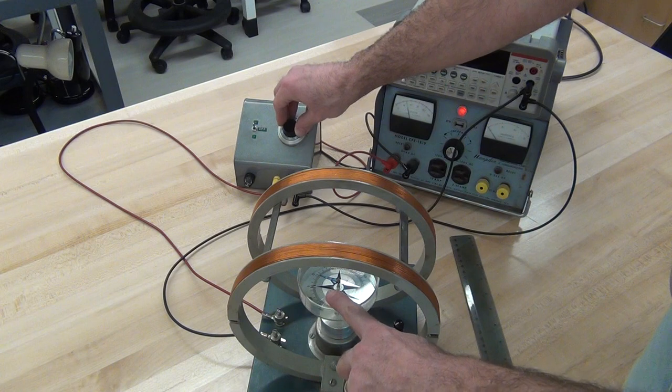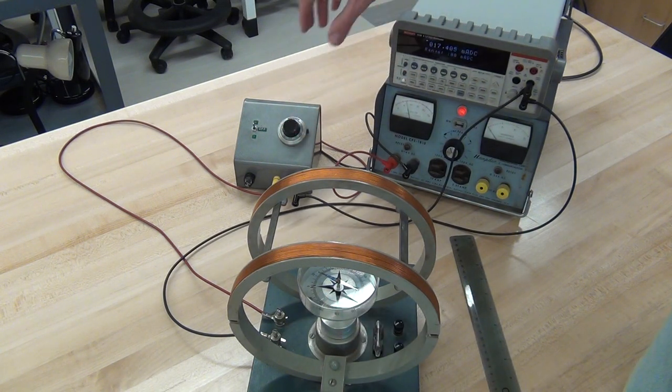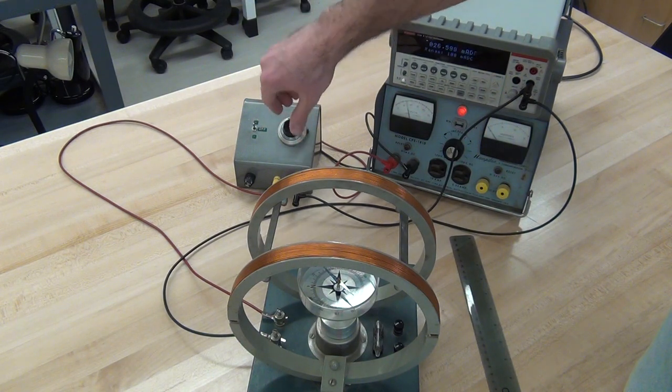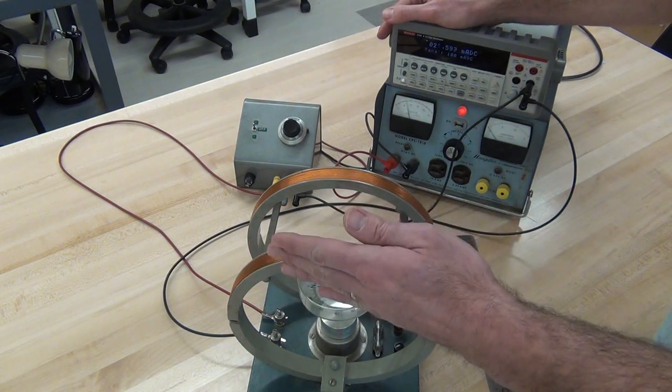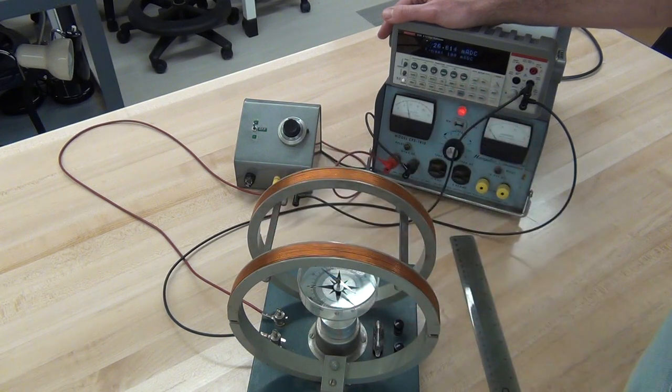Now I can adjust the deflection of the needle by adjusting the voltage divider and measure the current for those different deflections. So I'll want 10 degrees, 20 degrees, 30 degrees, 40 degrees, all the way up to 60 degrees.